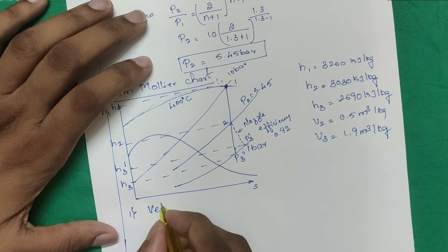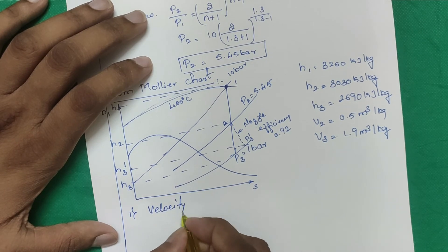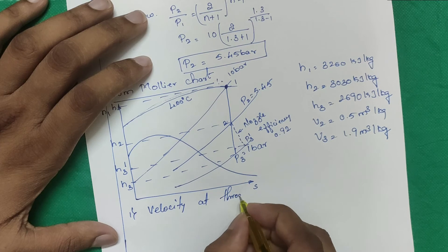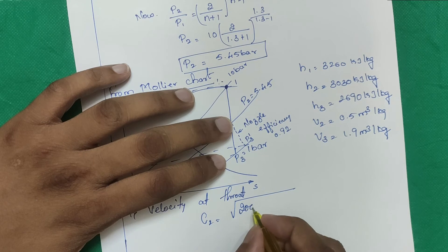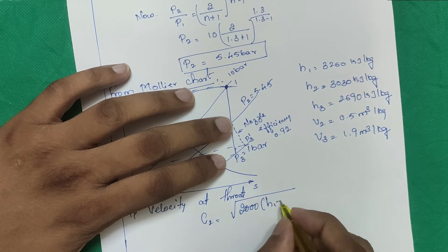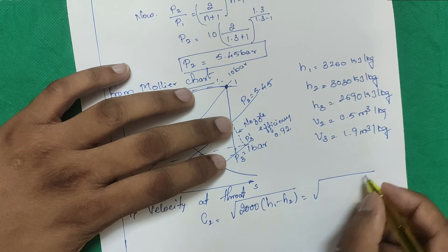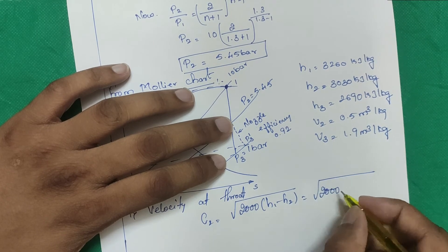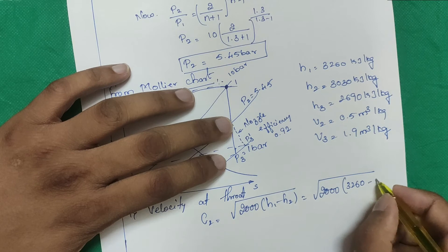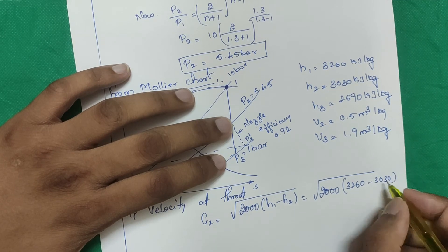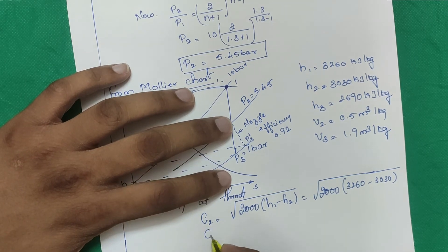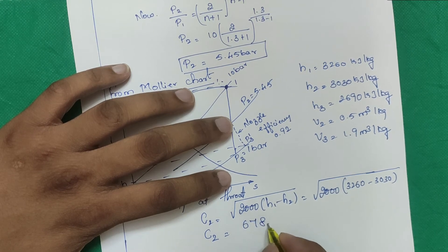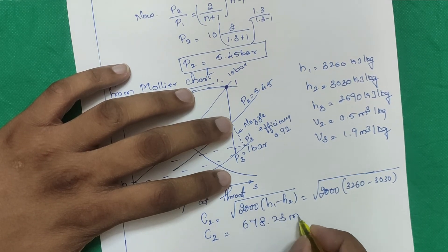To find throat velocity c2: use c2 = √(2000 × (h1 − h2)). No nozzle efficiency is applied here since efficiency only applies after the throat. Result: c2 = 678.23 m/s.